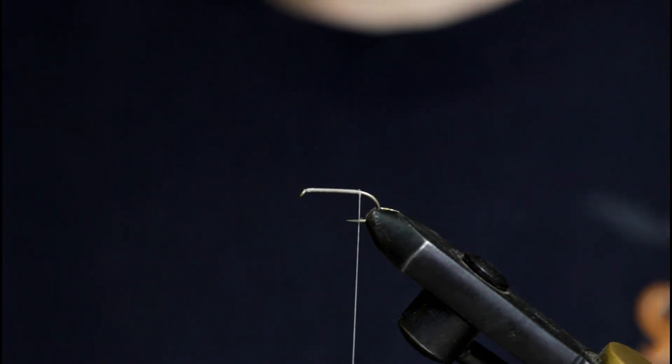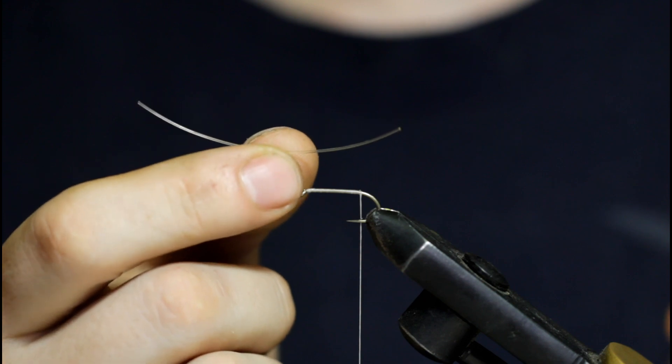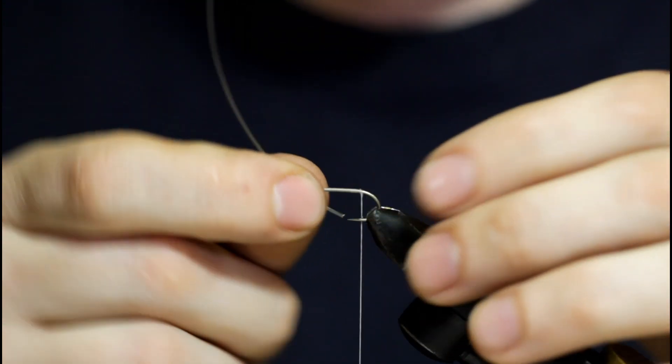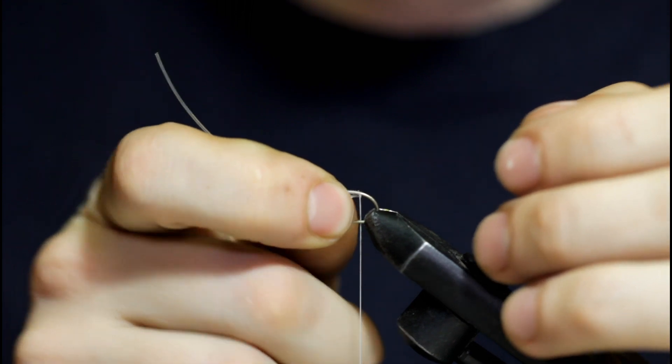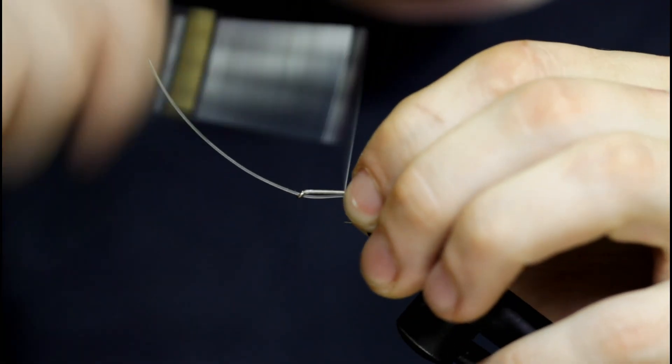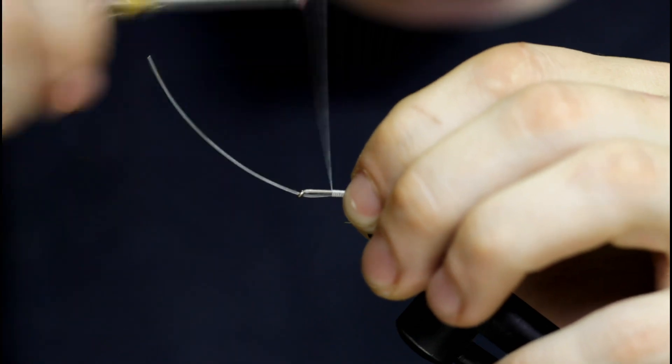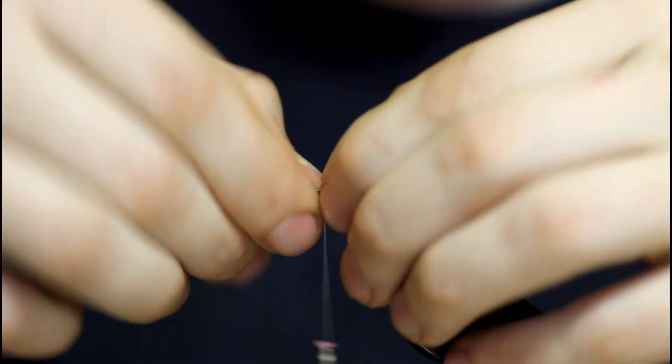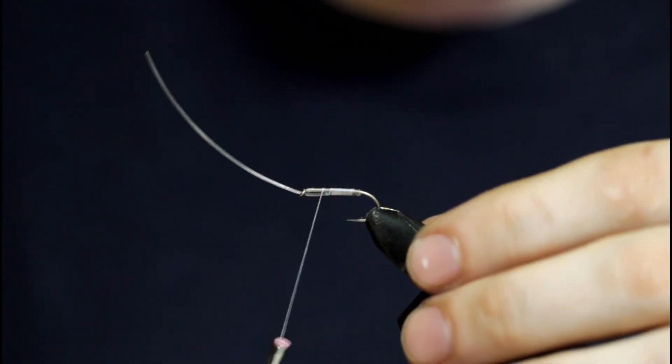Now I'm going to grab a piece of monofilament here, 30 pound test. Slide it under the hook eye. It's about two and three quarters inches long. Take some wraps forward to secure it. Make sure it's nice and even here.